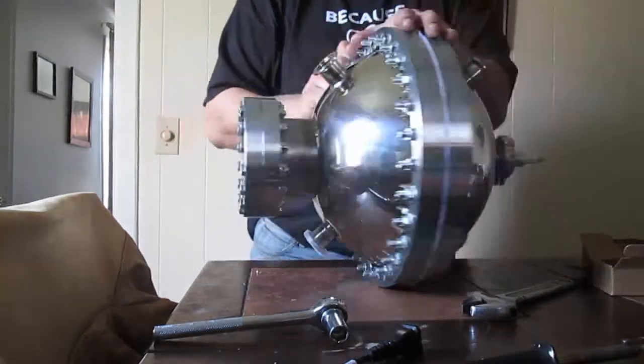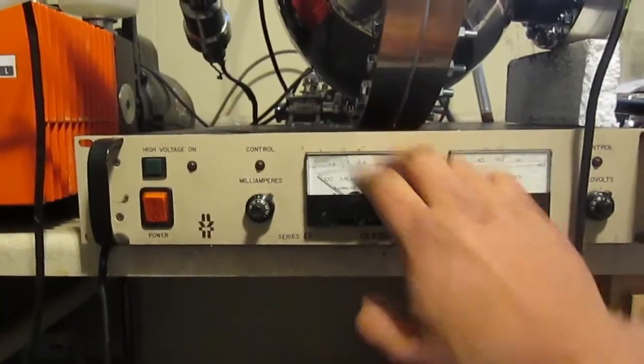The process seems simple enough: a vacuum chamber, some high voltage, and deuterium, and voila! Nuclear fusion in a bottle.